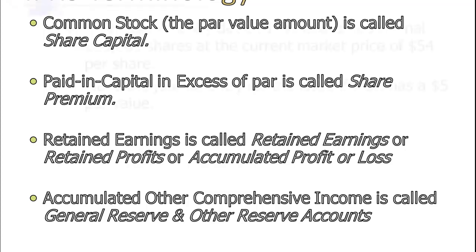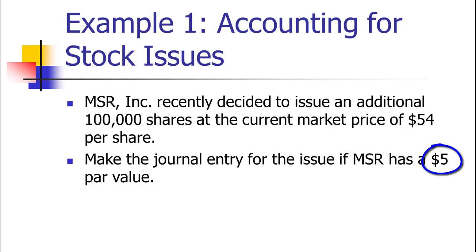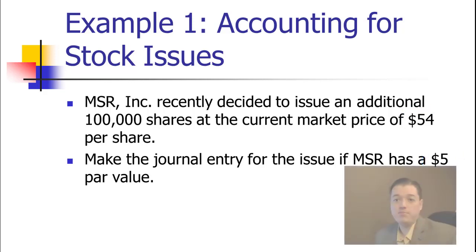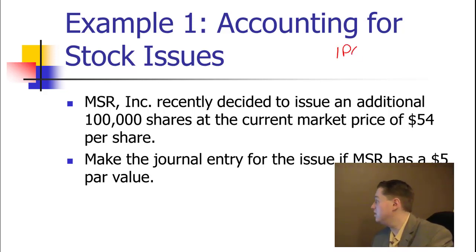On to the journal entries. Here's our example company, MSR Incorporated. They've decided to issue 100,000 shares of stock. Currently the market price is $54 per share, and we want to make the journal entry assuming they have a $5 par value. There are two important finance terms you should be familiar with from an accounting perspective: an IPO and an SEO.